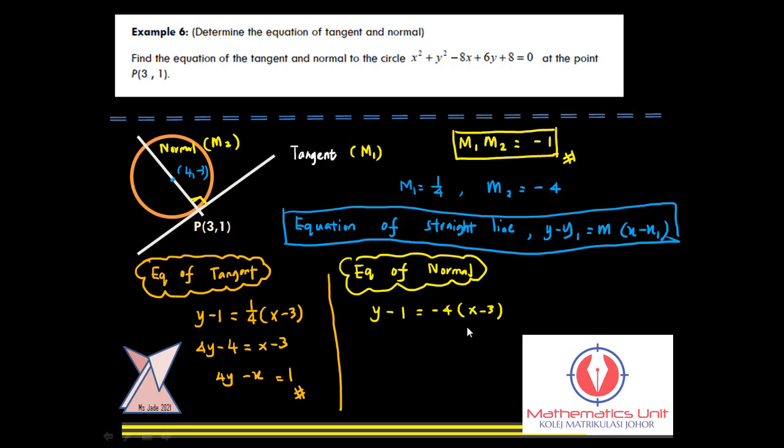It comes to the equation of normal. Using, taking the 3 and 1 and the gradient is -4. As usual, substitute into the equation of straight line. Lastly, you also will obtain the equation of normal easily. That's all for today.